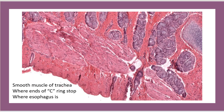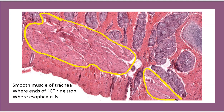And then once again the smooth muscle — all of this tissue I'm outlining in yellow is the smooth muscle of your trachea, and your esophagus would be out that direction somewhere. We can see a tiny bit of hyaline cartilage over here, so we're getting just the end of the C-ring. Generally this smooth muscle exists in the area where there is no hyaline cartilage ring.